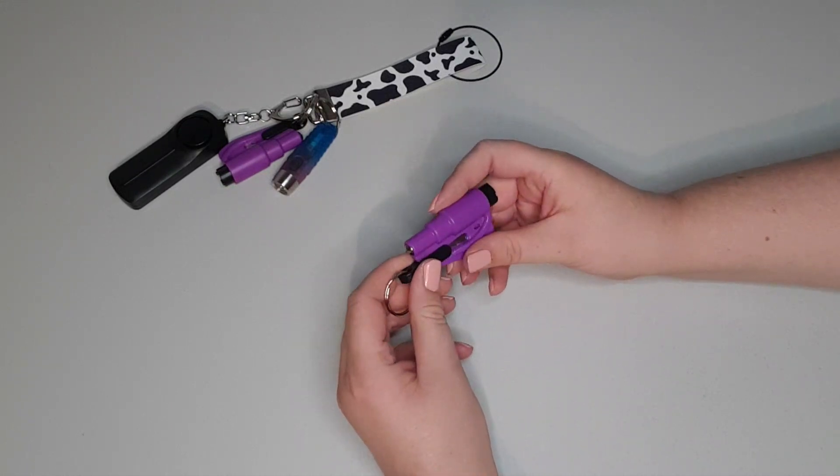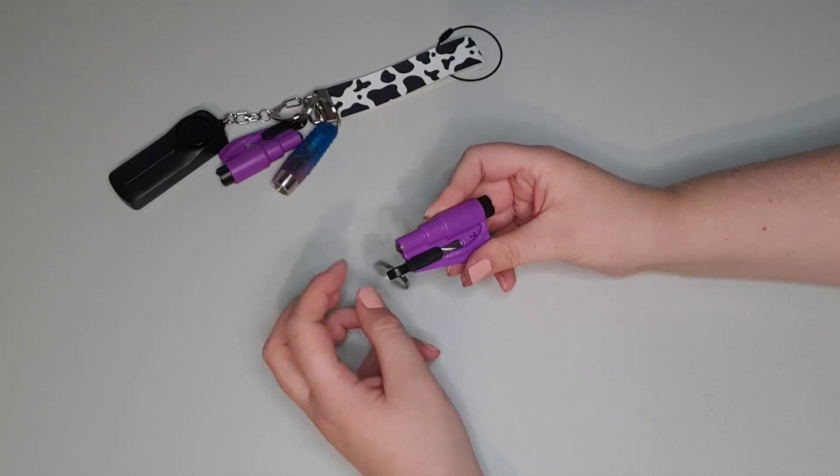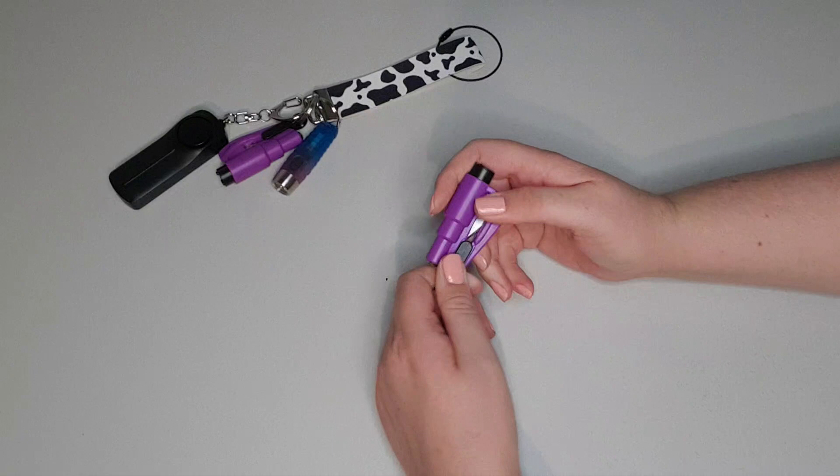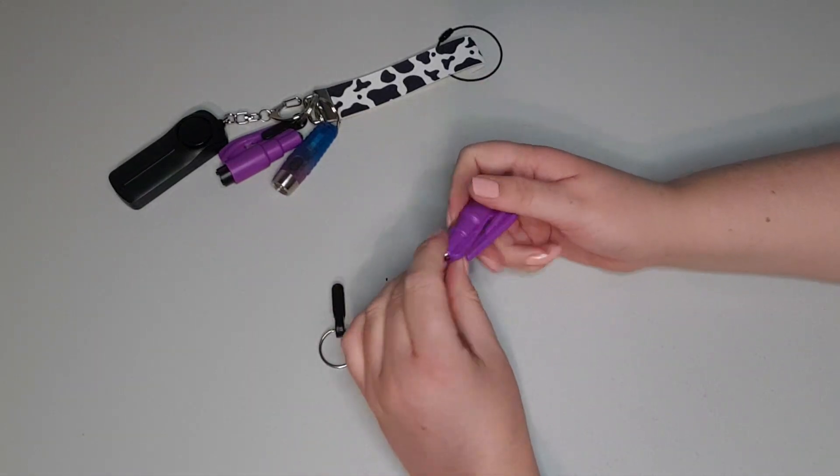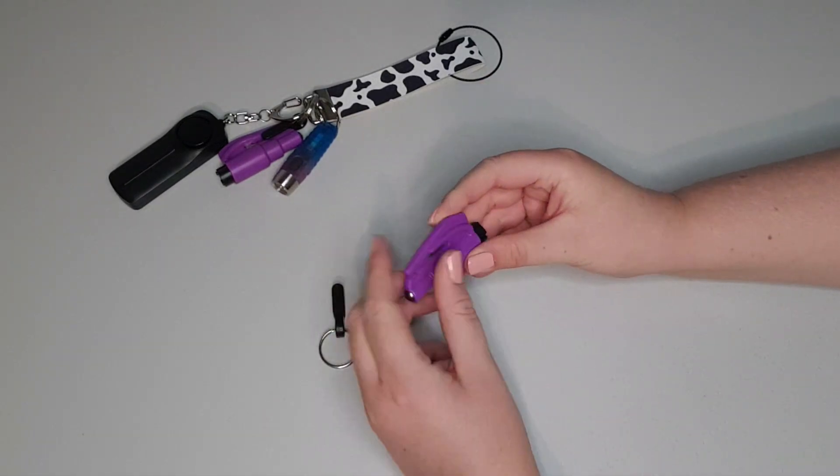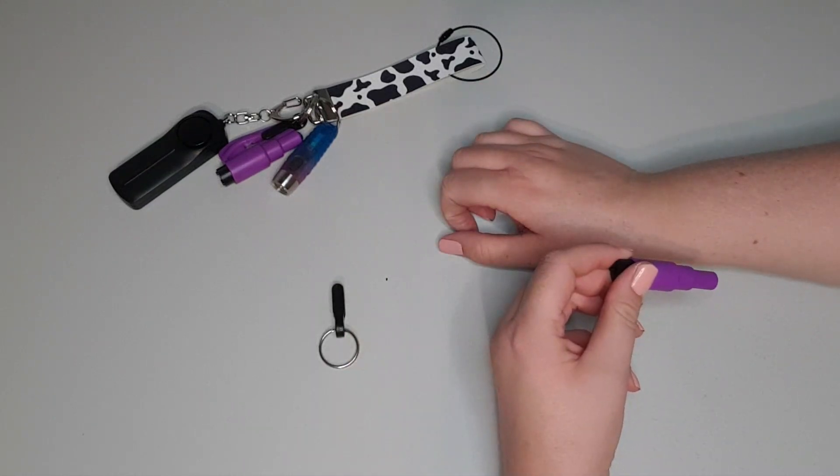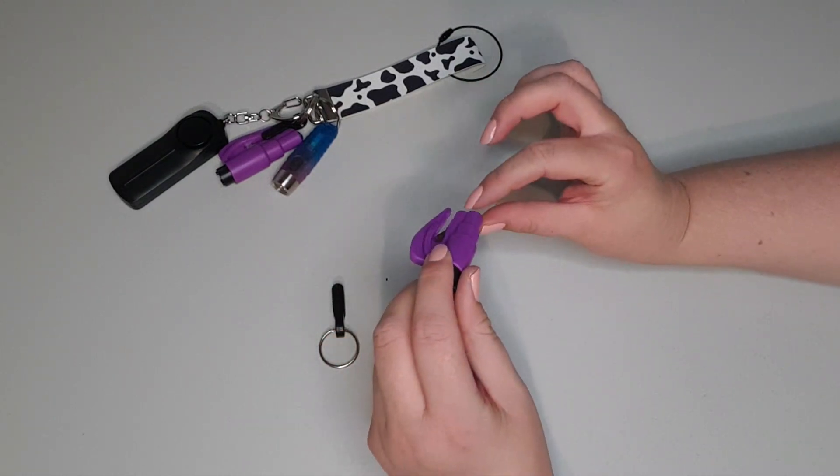So the second part of this is actually a seatbelt cutter. If you pull this off, this is the exposed blade here. You put this up to your chest where your seatbelt is and slice it down and you will tear off your seatbelt.